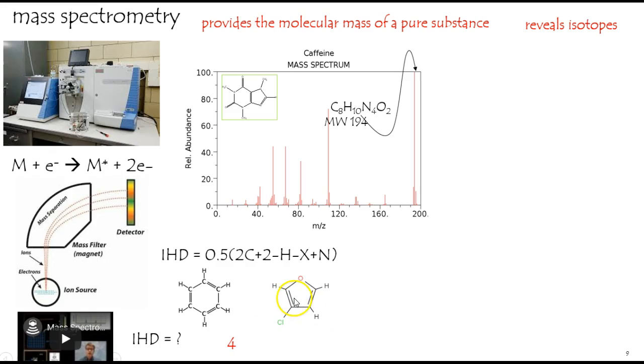Here we have two double bonds and one ring, so the index of hydrogen deficiency is three. So that's kind of handy.